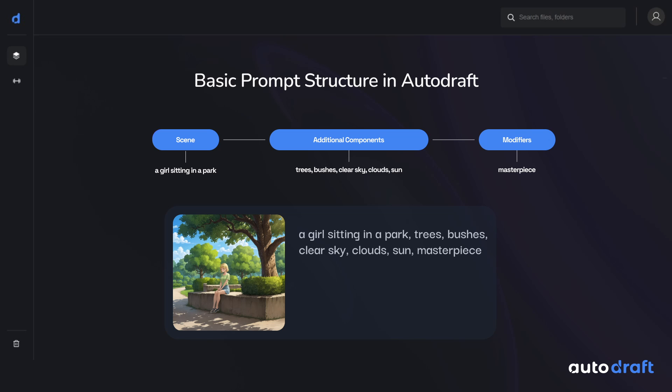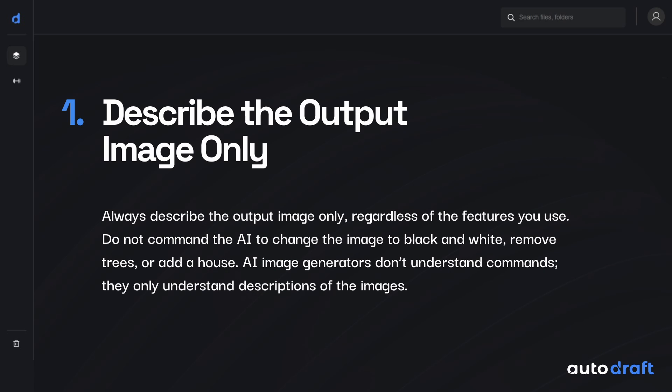In this sample prompt, the scene is a girl sitting in a park. The additional components are trees, bushes, clear sky, clouds, and sun. And Masterpiece is the only modifier added. We must always follow this basic structure of prompting for all functionalities of Autodraft AI.